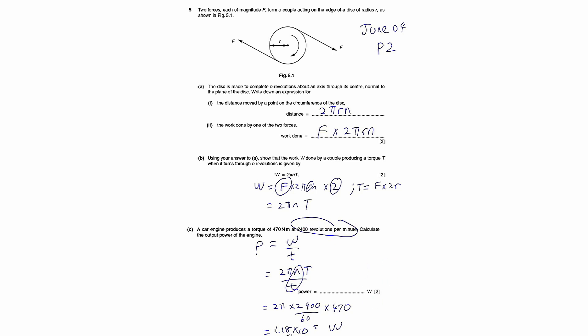But because the unit is watt, which is per second, you would have to convert the per minute here to per second. Which is why the n over t here, instead of 2400 per minute, one minute I would convert to 60 seconds.